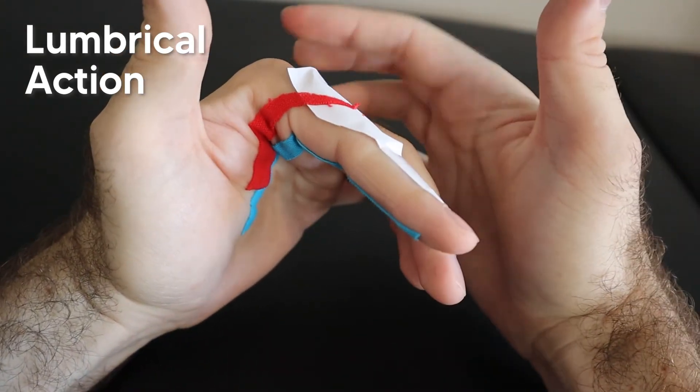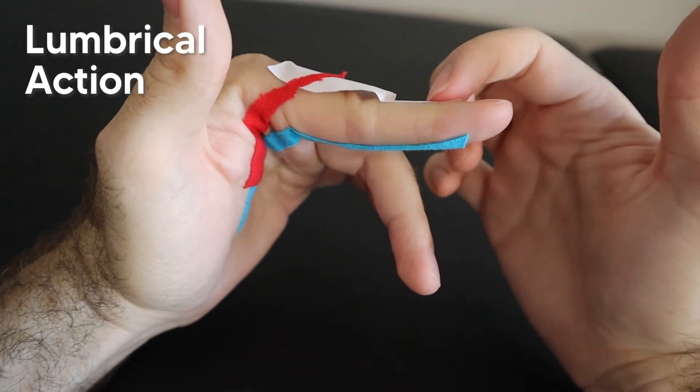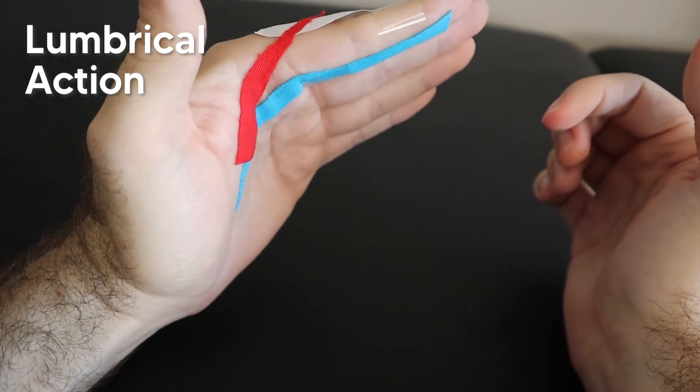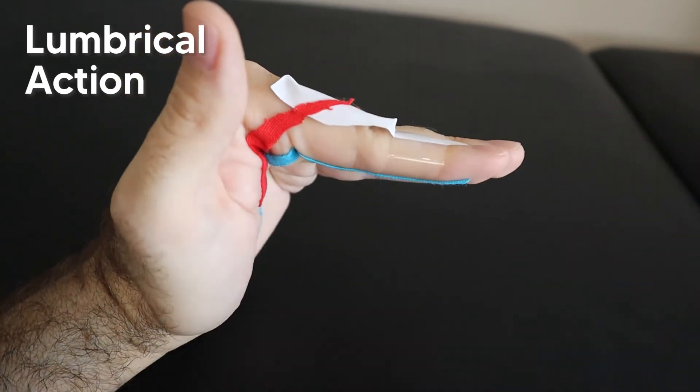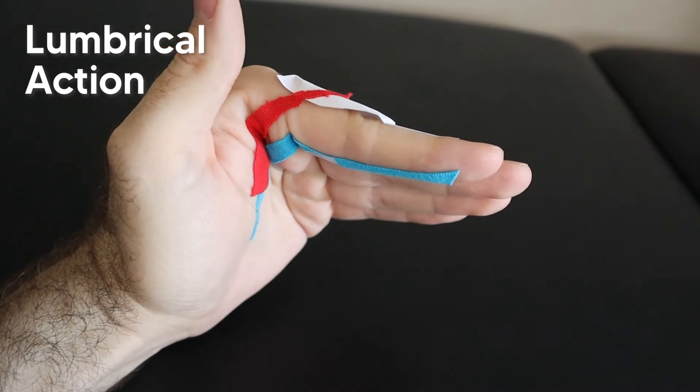So when they contract, if you can imagine it's pulling, it ends up flexing this MCP joint, the first knuckle, but at the same time it pulls taut the rest of the extensor hood that runs down the finger. So what ends up happening is you flex the MCP joint, but then you extend the PIP joint and the DIP joint. So if all four fingers do at the same time, you end up in this kind of weird hand position.